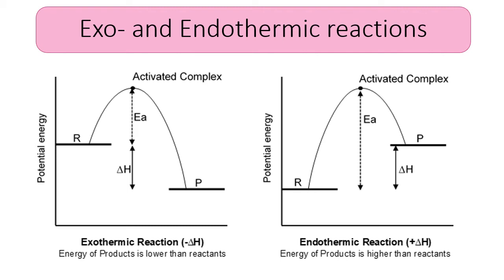Looking at the diagram on the right, the products have higher energy than the reactants. When we subtract the energy of the reactants from the products we get a positive value, meaning it's an endothermic reaction. This means that some of the energy put into the system at the start has been held and is now stored as bonds within the products.